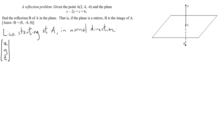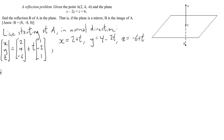So it will look like this: x, y, z - any point on the line can be written as a starting point, which we'll take to be A, 2, 4, minus 6, plus a parameter t times the normal vector of the plane, which has components 1, minus 2, 1. We read those off from the equation of the plane. So here's the equation of the line: x equals 2 plus t, y equals 4 minus 2t, z equals minus 6 plus t.